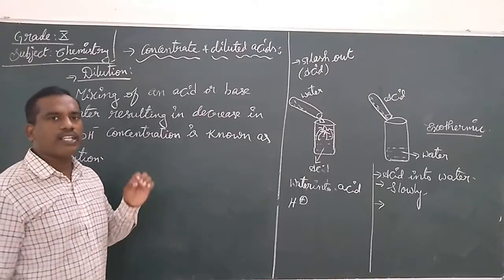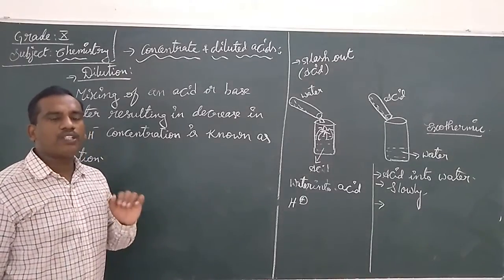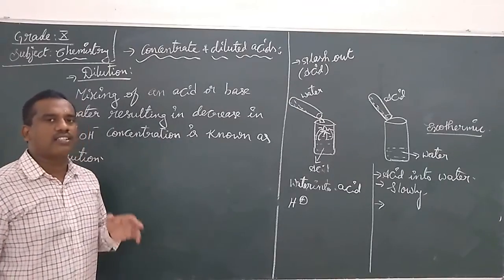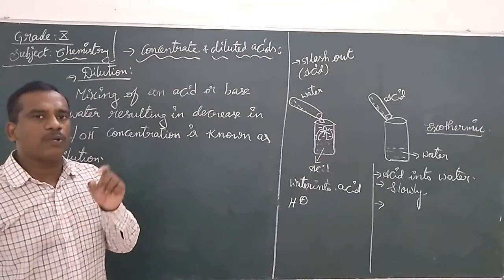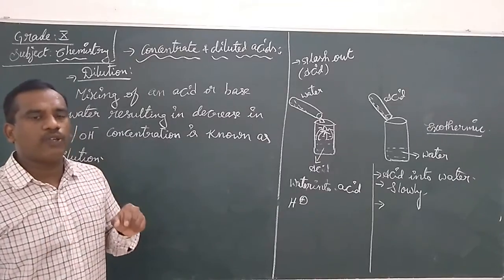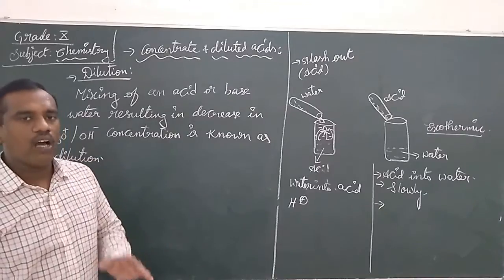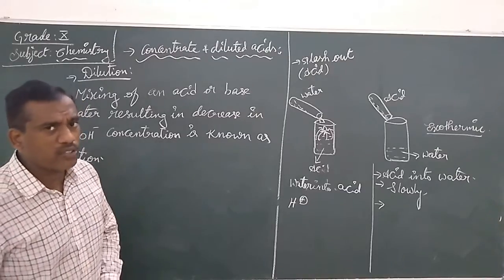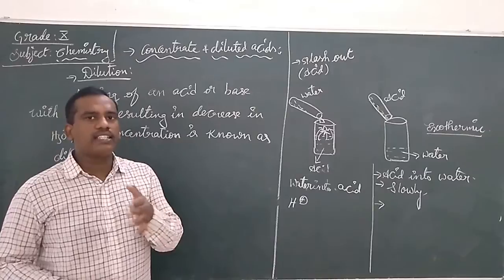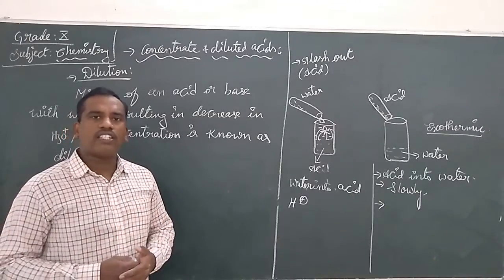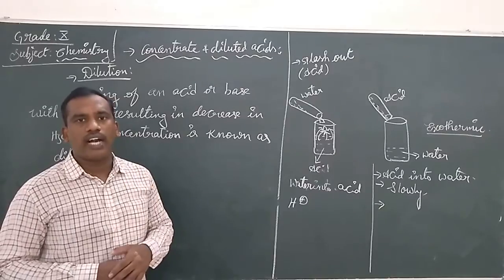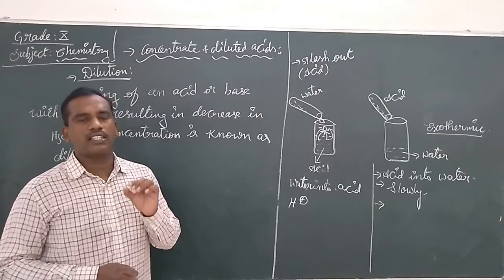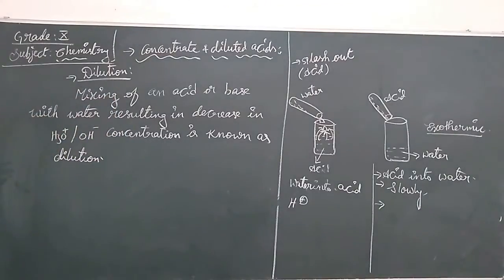Up to now we have discussed what dilution is. In the upcoming class, we shall discuss the next level of the chapter — that is, what about salts. Our conclusion of this part is: acids will produce H⁺ ions and bases will produce OH⁻ ions in water. We have also discussed pH, potential of hydrogen, and its sensitivity in our surroundings in the starting classes. The upcoming classes we shall discuss about the salts topic. Thank you.